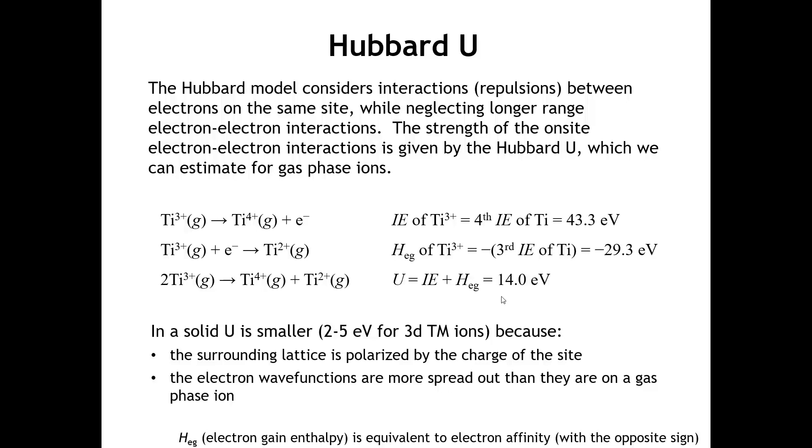In a solid like titanium oxide, the U is not going to be this big, not 14 electron volts, but something on the order of maybe 2 to 5 electron volts. There are two reasons why it's smaller. The surrounding lattice can relax or polarize in response to the movement of charge. For example, the oxygen ions could move closer to the titanium 4-plus and away from the titanium 2-plus, reducing the energy penalty.